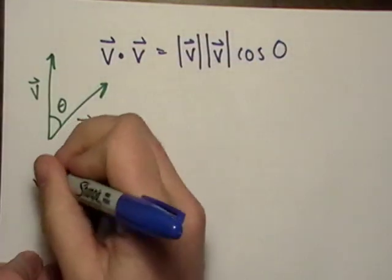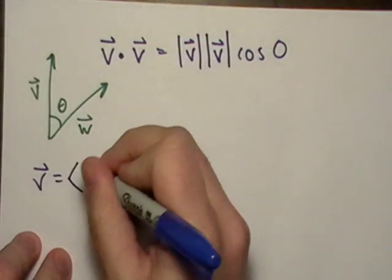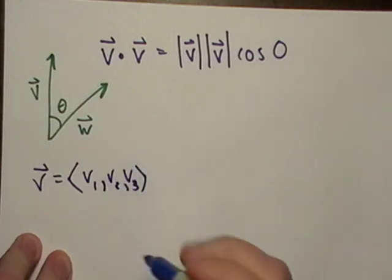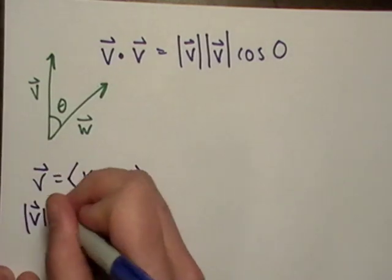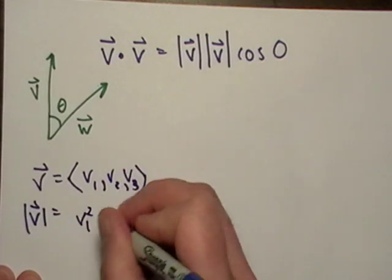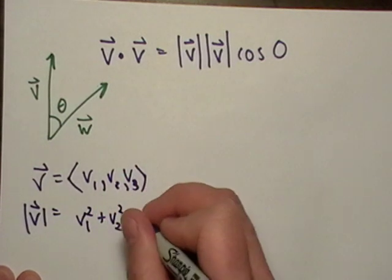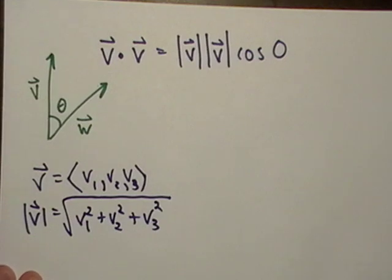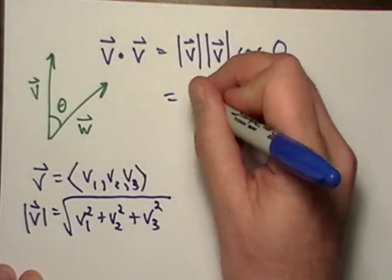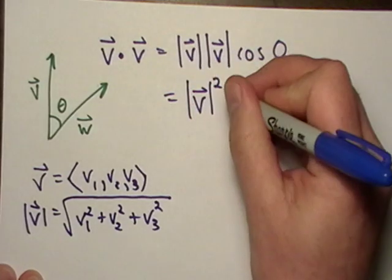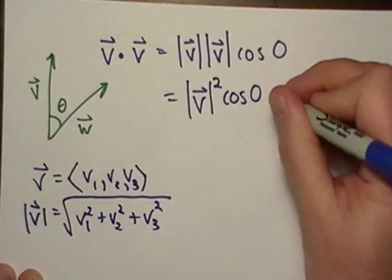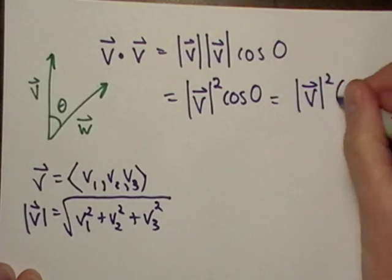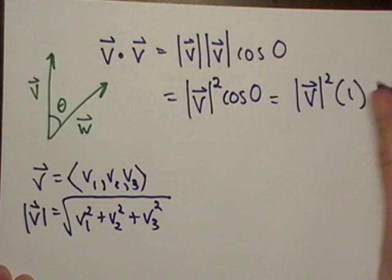So let's just go ahead and say that vector V is equal to V1, V2, V3. Those are the components. So what would the magnitude be? Well, that would be V1 squared plus V2 squared plus V3 squared, all under the square root, right? So let's simplify this. And this is just going to be magnitude of V squared cosine of zero, which is equal to magnitude of V squared. Cosine of zero is just one, right? So it still holds.